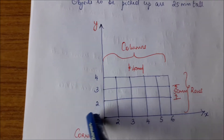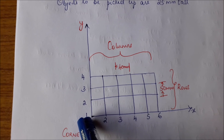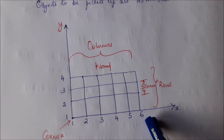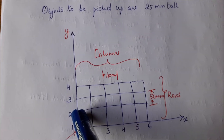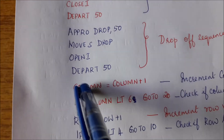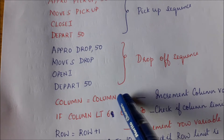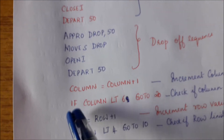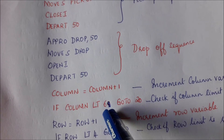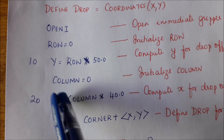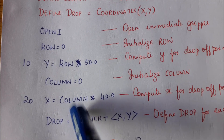Now we want to place the next part. We fill one row completely before moving to the next. To do this, increment the column by 1 — column was 0, now it becomes 1. If column is less than 6 (since there are 6 columns), go to step 20 and compute x as column times 40. With column equal to 1, x becomes 40. So we have moved 40 mm in the x direction, reaching the second column position.